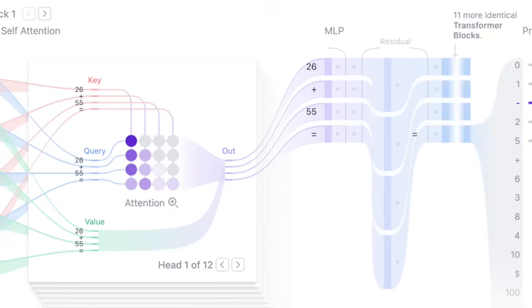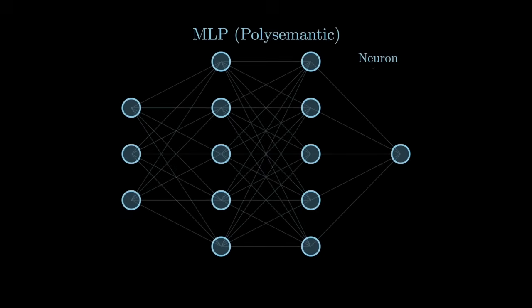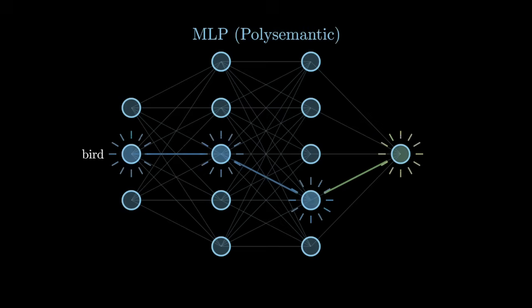After attention finishes contextualizing the embeddings, they flow into the feed-forward network, technically the multilayer perceptron, which further transforms the contextually informed embeddings to contribute toward the final prediction of 81. However, most neurons in the Transformer's MLP are polysemantic, which means a single unit might activate for unrelated inputs like numbers, cities, or animals. So it is hard to say exactly why any neuron fires.